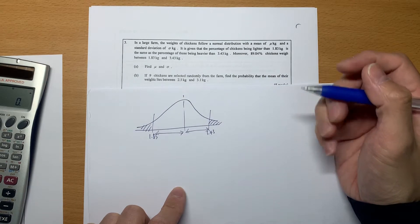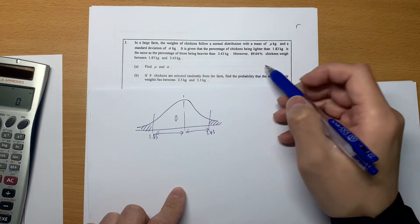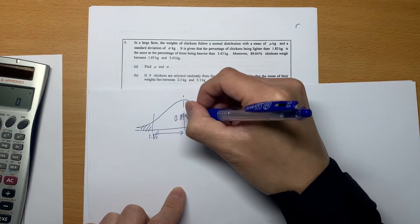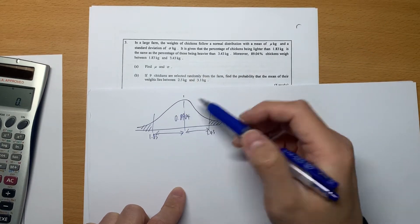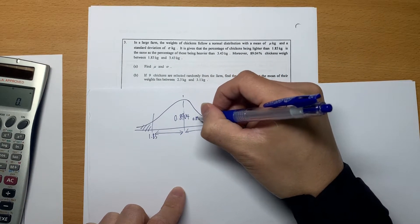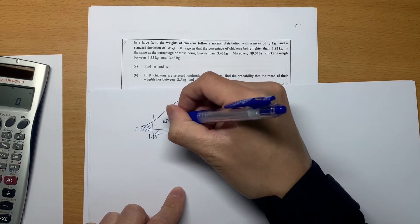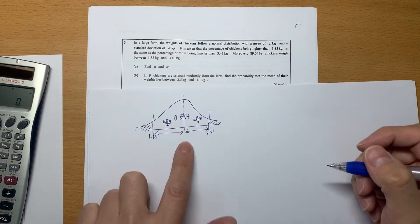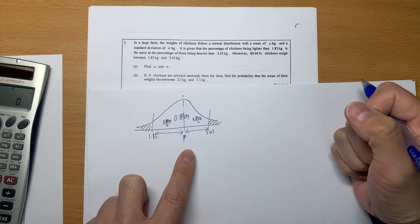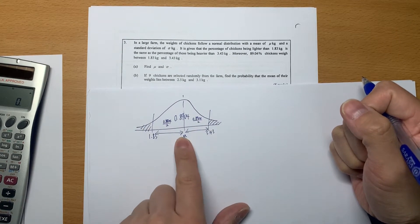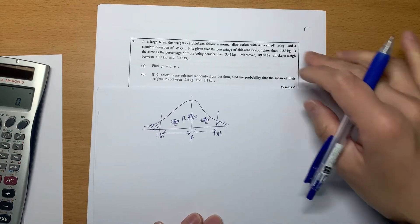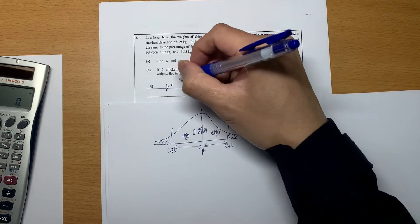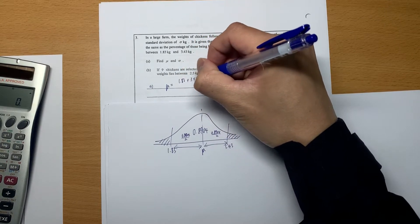The very important thing is 0.8904. This 0.8904 is the middle part area, which means each part is 0.8904 divided by 2. It's very easy to get the mean because they say left hand side and right hand side are the same. The midpoint is simply the mean because it's symmetric. It's easy to get μ - just 1.83 plus 3.43 divided by 2.